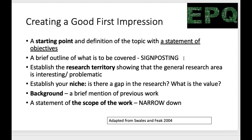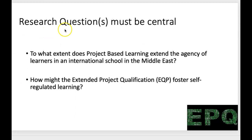You might also want to establish the research territory — showing the general research area and why you're interested in it or why it's problematic. For example: 'this report is going to look at whether criminals are genetic or socially created, and this is so important because it has incredible implications for the justice system, whether we hold people accountable for crimes, and how we sentence people.' This essay will address this gap in knowledge, establishing why your essay might be covering new territory.